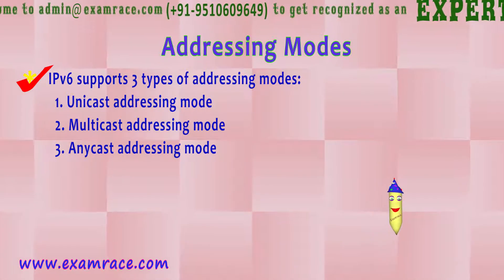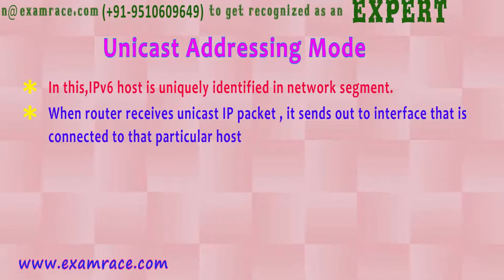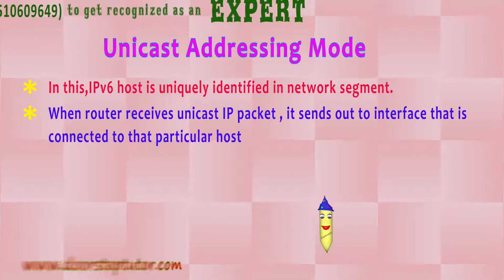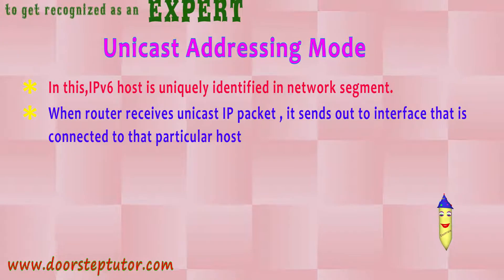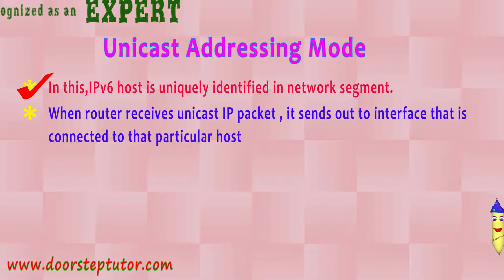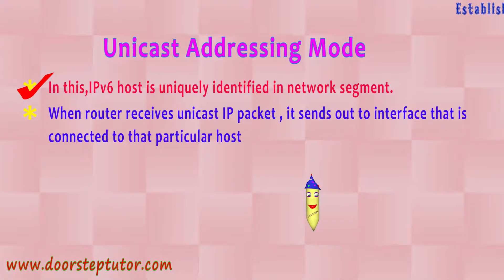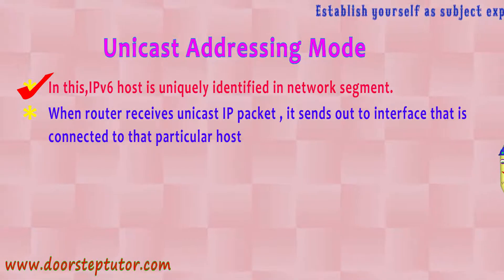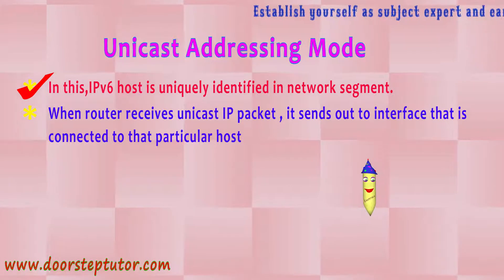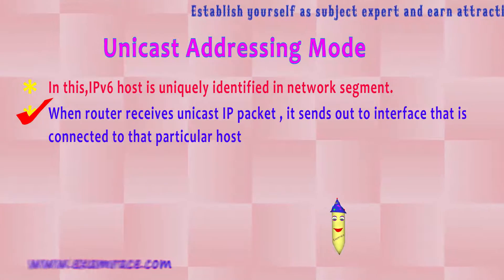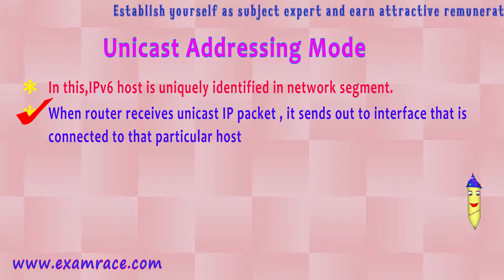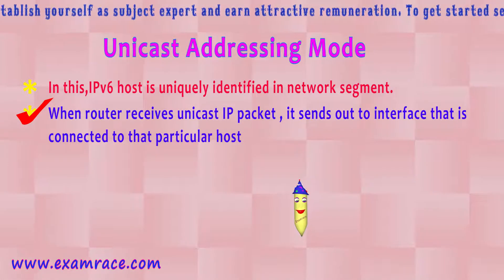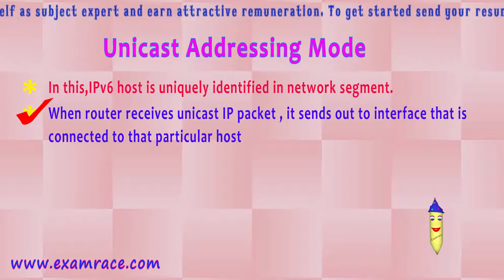Let's move to unicast addressing mode. As its name represents, data will be sent from one sender to one receiver only. In this mode, the IPv6 host is uniquely identified in the network segment — the destination has a unique identification when a packet is sent from sender to receiver, uniquely identifying the location to which it has to be sent. When a router receives a unicast IP packet, it sends it out on the interface connected to that particular host, routing it properly until the packet is received by the receiver.